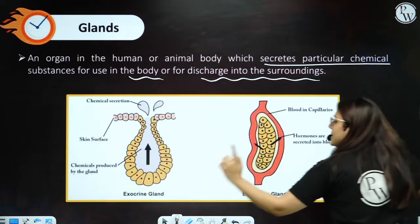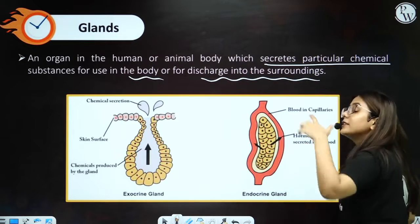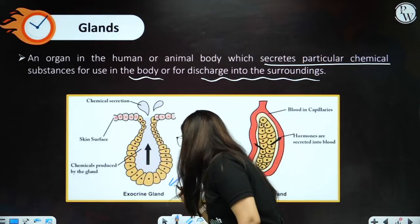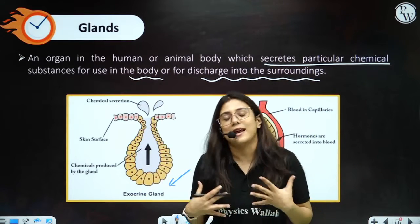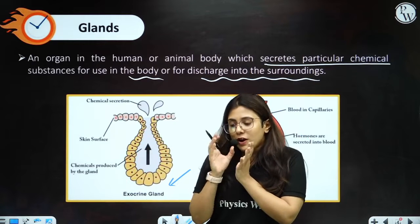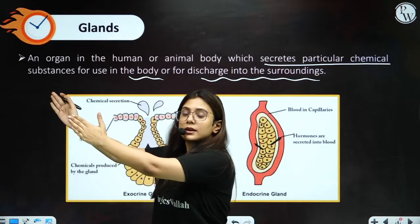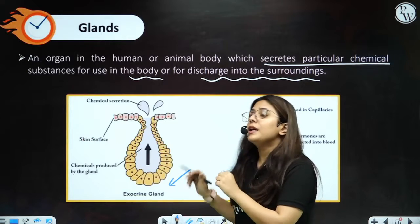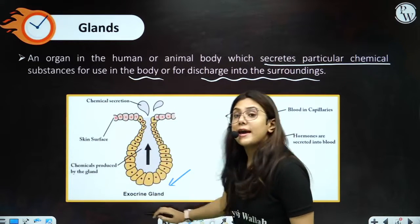Now, there are two types of glands. First is known as the exocrine gland. If I am an exocrine gland, whatever chemical I have made, I will add it into a duct. Duct means tube. So whatever substances I am making, I am adding them into a tube. Such type of glands are known as exocrine glands. Exocrine glands add their secretions inside the duct, inside the tube.